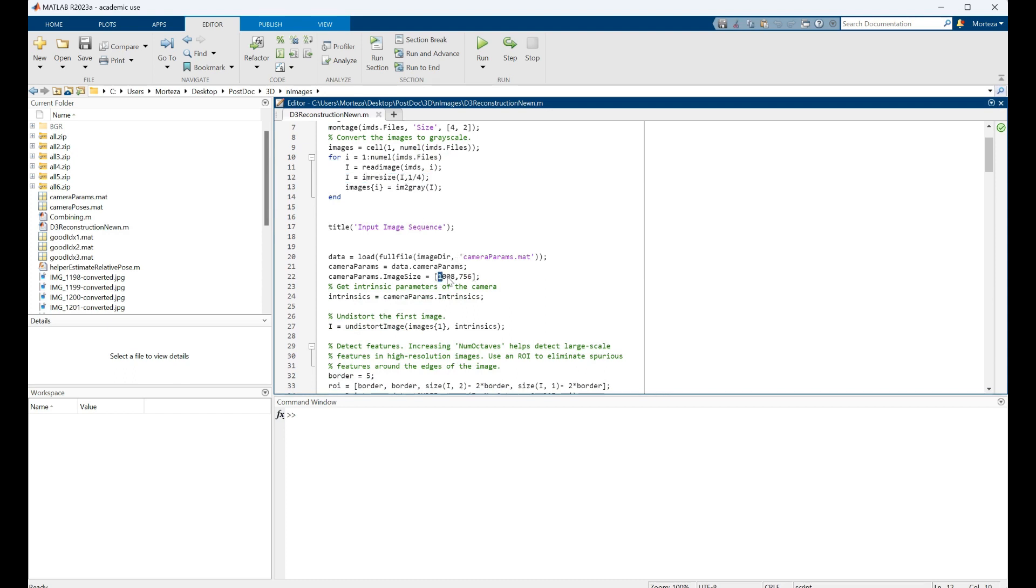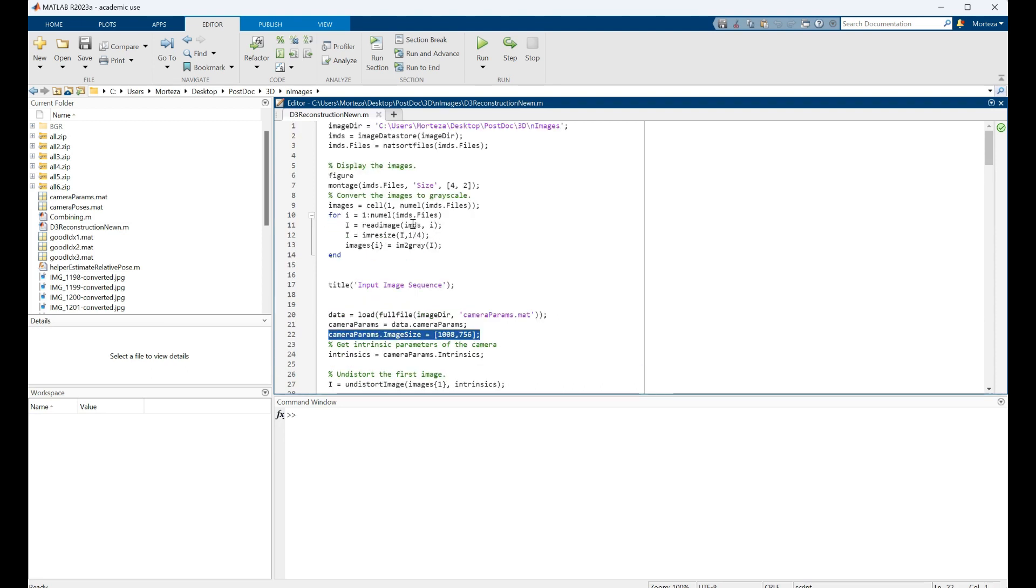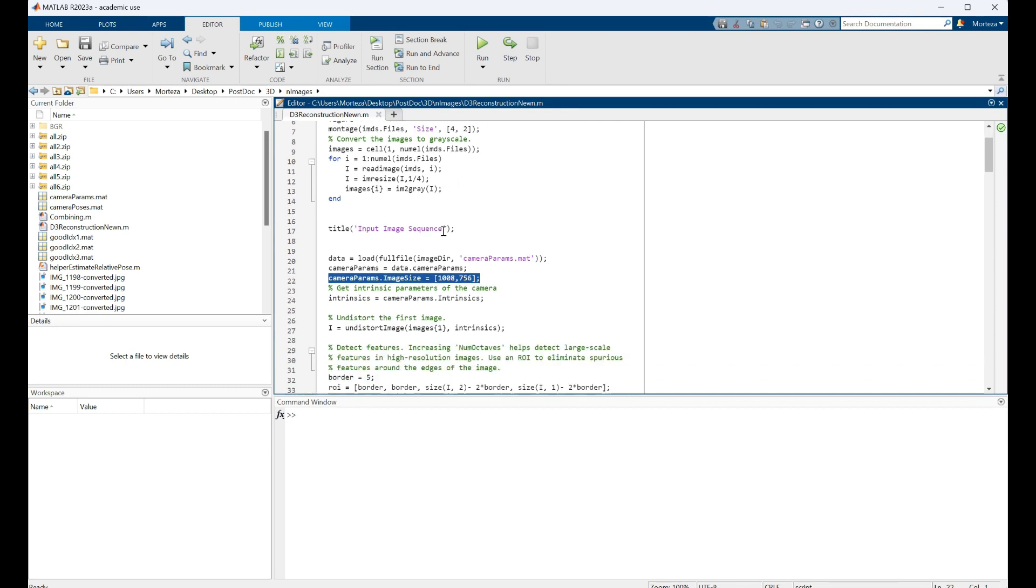So the new size of my images is this one: 1008, 756. So I have to make sure to change that in the camera parameters. So everything is the same as the script that is already available in MATLAB, but you just have to change the size.